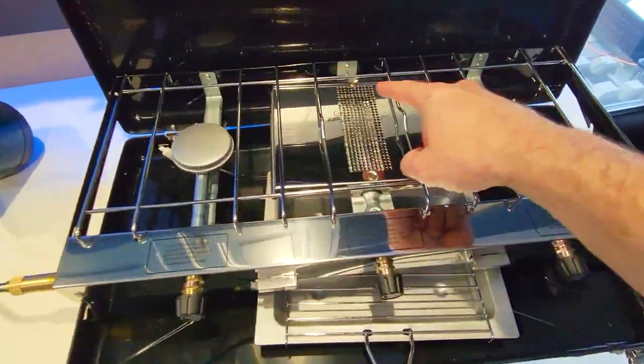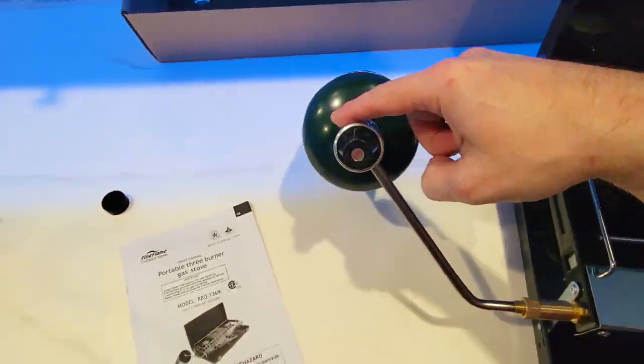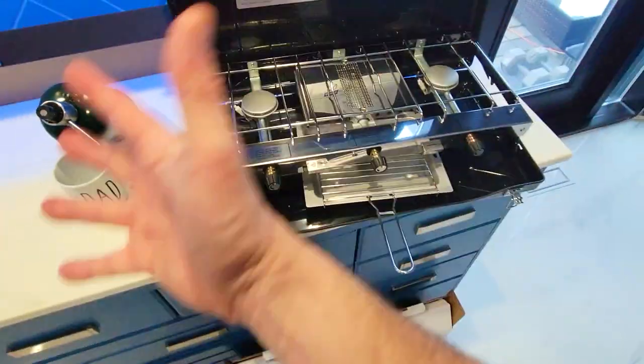There are two burners on each side and one in the center, and each one is controlled independently. The propane tank is attached through here. Now of course you want to do this outside, so we're going to turn this on really quickly and then take it outside and start cooking.